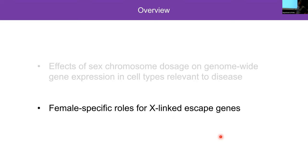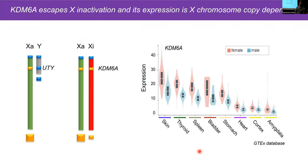For the next part of the talk, I'm going to focus on one escape gene I've been interested in for some time — and how I've been trying to uncover its roles in female-specific functions. This escape gene is KDM6A. KDM6A is a histone demethylase that shows consistently higher expression in females compared to males. This array of different tissue types from the GTEx database shows that in each tissue type, KDM6A is more highly expressed in females compared to males.